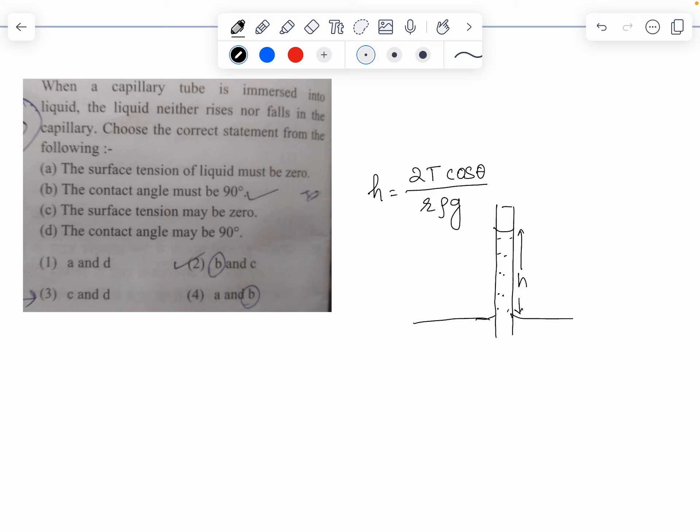r is the radius of this tube. According to the question, there is no rise, which means h is 0.